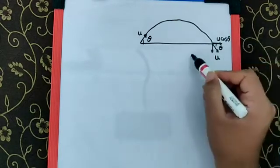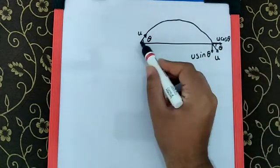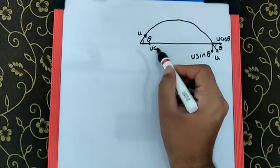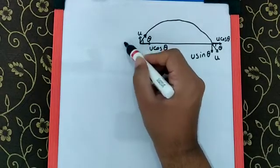Over here it will be u cos theta horizontal and the vertical component is going to be u sine theta.